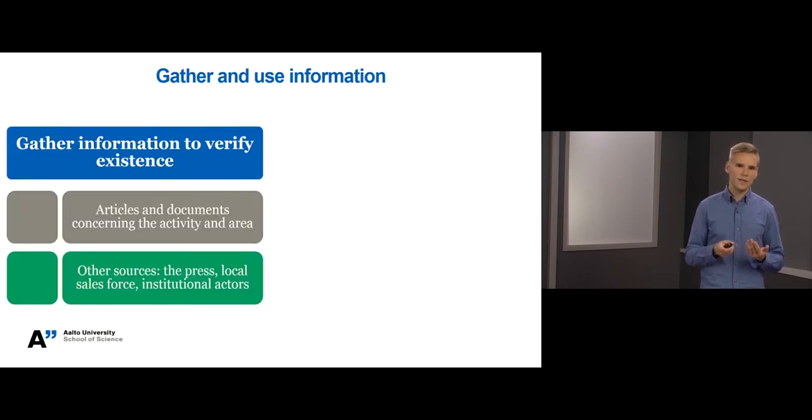After defining the milieus, an actor needs to gather information about it to verify its existence and borders. This can be done by searching for articles and documents dealing with the activity and or area. For instance, in our Silicon Valley case, looking for articles from the internet about the construction of new business premises in Silicon Valley or about new high-tech companies who are moving to Silicon Valley or who have already moved to Silicon Valley.